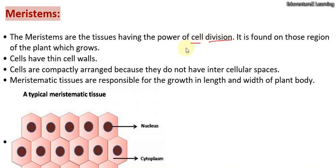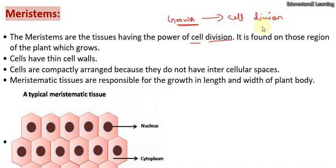Why do they have the power of cell division? Because meristems are related to growth, and growth happens through cell division. One cell divides into two, that one divides into two again, and this way our cells keep multiplying and our body keeps growing. Similarly, this happens with plants too. We have already discussed cell division and growth in Chapter 1 of Standard 9.